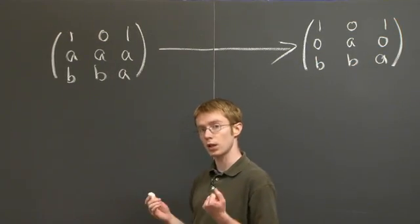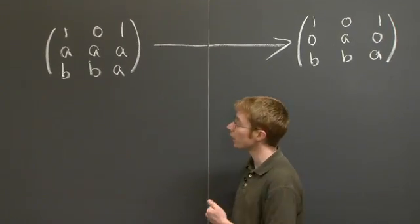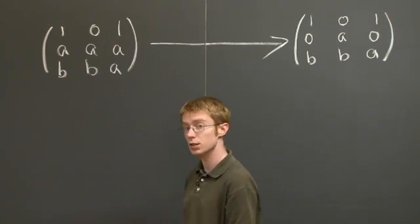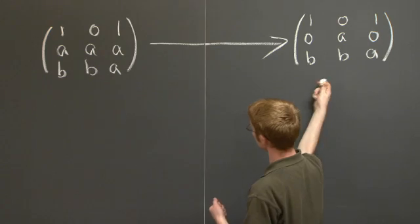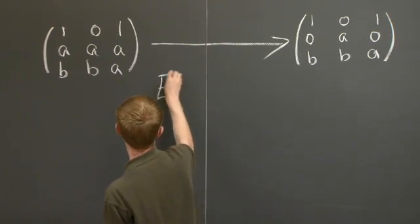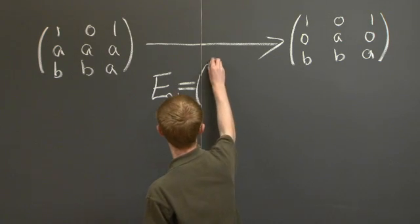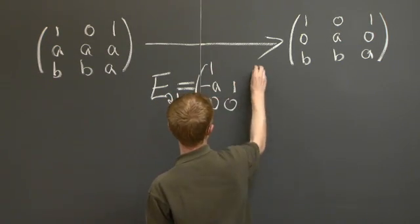But we're not just doing elimination. We're finding an LU decomposition. So we need to keep track of the elimination matrix that I multiplied this matrix A by on the left to get this matrix. So what is that? That's this E₂₁. Since I eliminated the 2-1 entry, I'll call it E₂₁. And it's this matrix. Why is it this matrix?